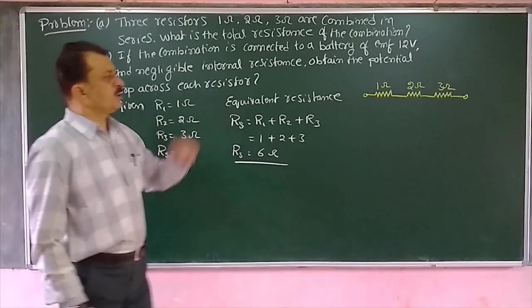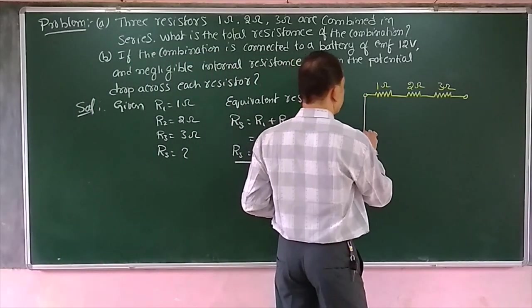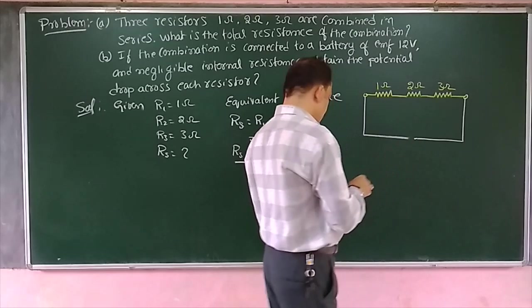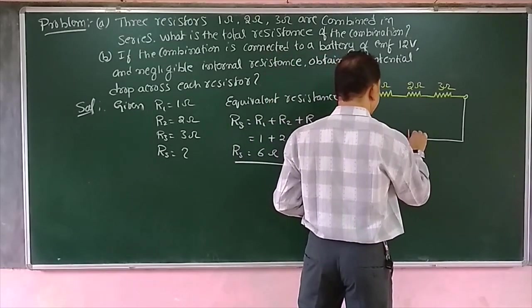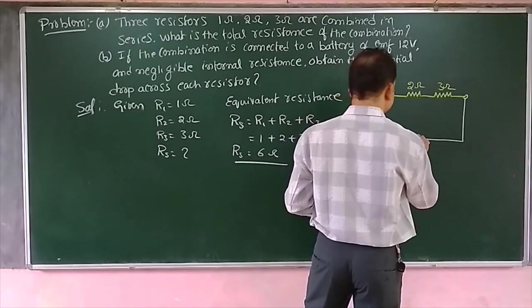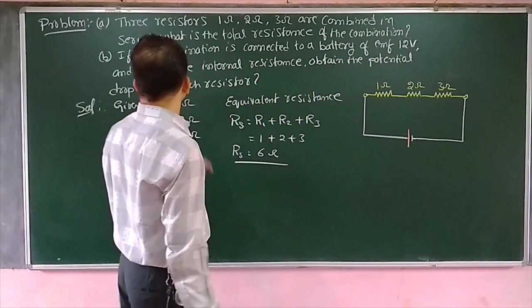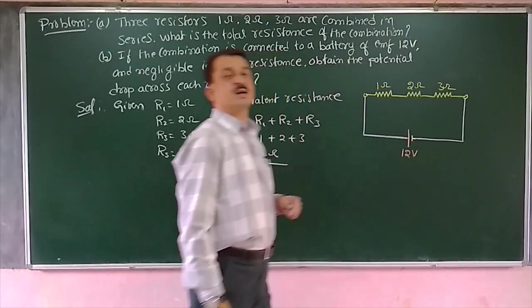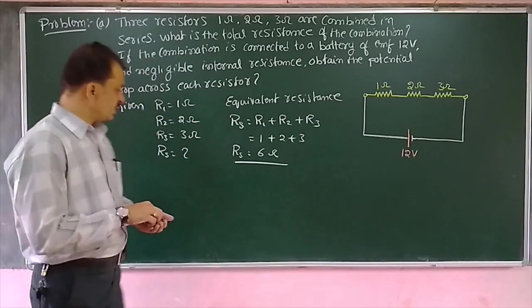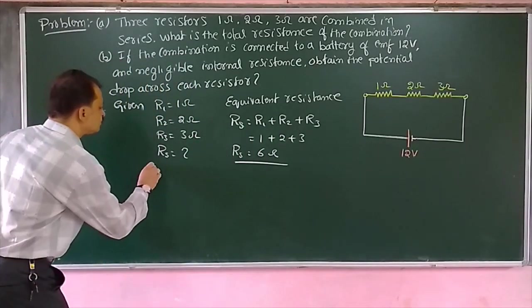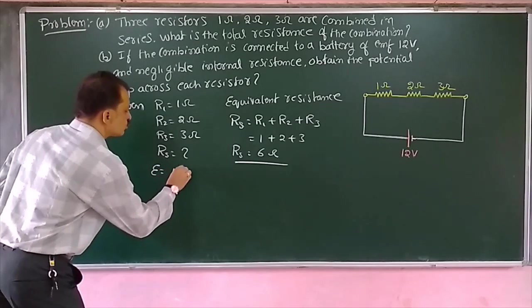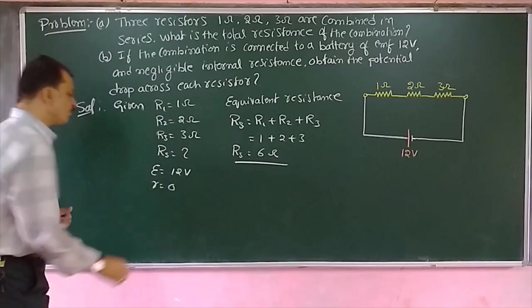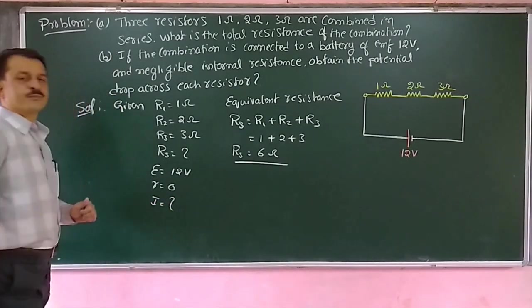Part B: the combination is connected to a battery. This combination is connected to a battery of negligible internal resistance. Battery of EMF is given as 12 volts. Internal resistance of the battery is negligible — we will treat it as zero. Then what is the current flowing through the circuit?